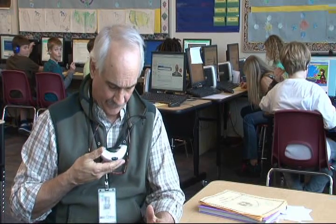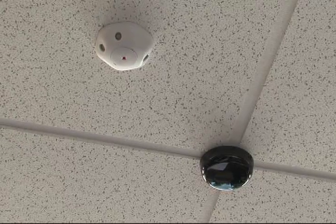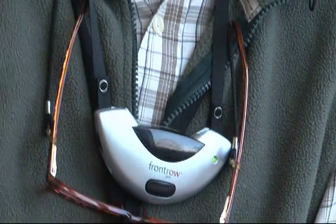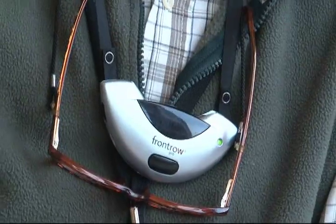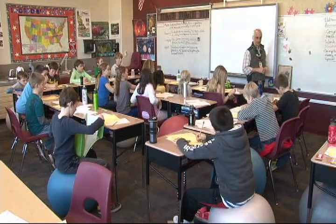This is a Front Row microphone — it's an IR microphone that connects to the black disk on the ceiling. This puts my voice out over the entire classroom through six or four speakers around the room, so I no longer have to elevate my voice to speak to the group. I can be anywhere in the classroom and everyone hears me, which is really important at the end of the day.